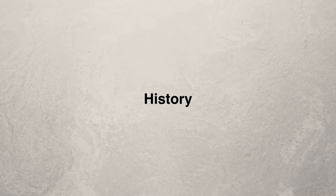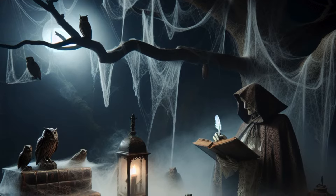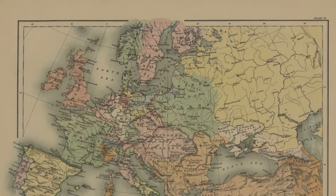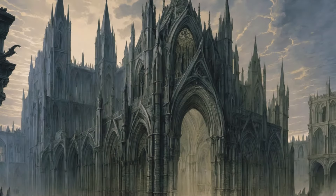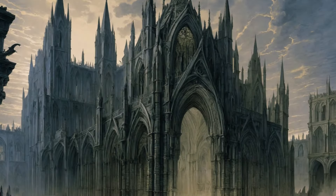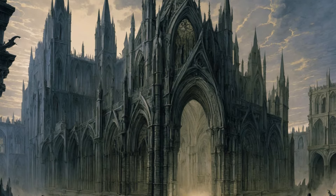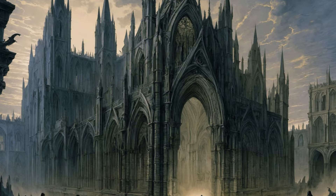The roots of Gothic literature can be traced back to the 18th century, a time of significant social, political, and cultural upheaval in Europe. The term Gothic originally referred to the architectural style of medieval cathedrals, characterized by pointed arches, ribbed vaults, and flying buttresses.